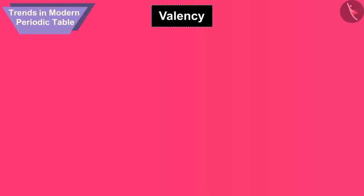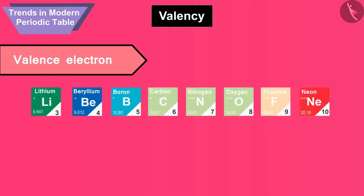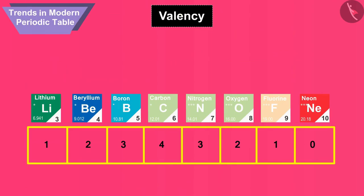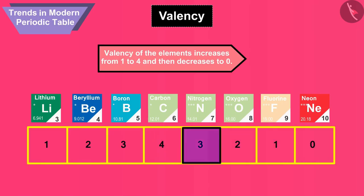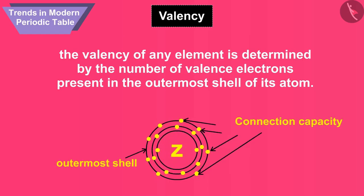Let us first begin with the trend of valency. On moving from left to right in a period, the number of valence electrons in elements increases from 1 to 8, and therefore their valencies can be found by the number of these valence electrons. So, on moving from left to right in each short period, the valency of the elements increases from 1 to 4 and then decreases to 0. The valency of any element is determined by the number of valence electrons present in the outermost shell of its atom.